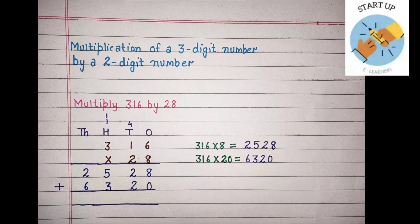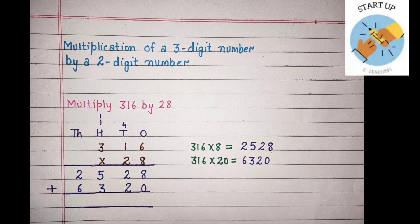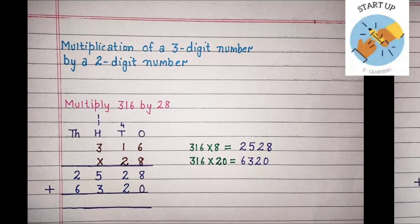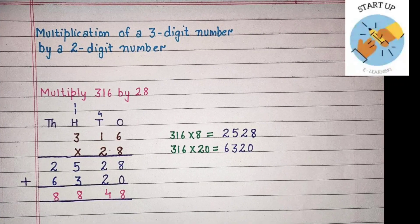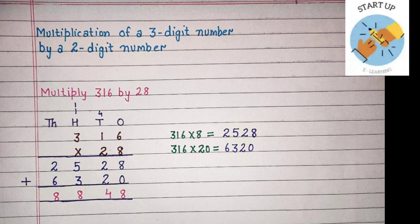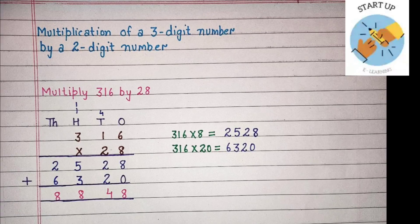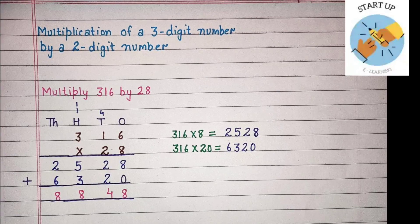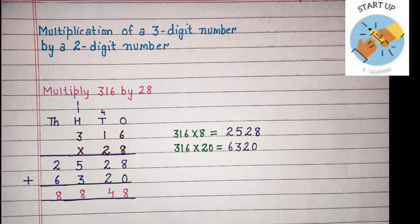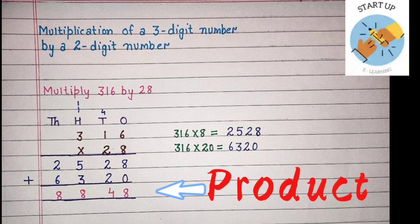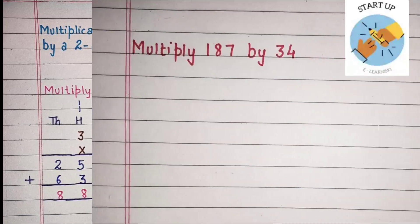Now we will add these two partial products to get the final product. 8 + 0 = 8. 2 + 2 = 4. 5 + 3 = 8. 2 + 6 = 8. The product of 316 and 28 is 8,848.